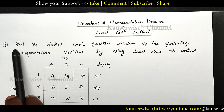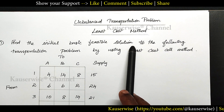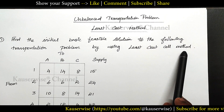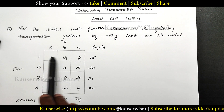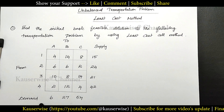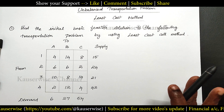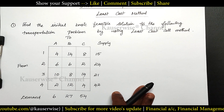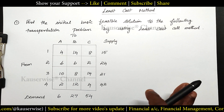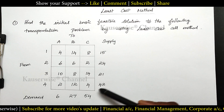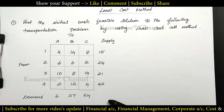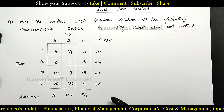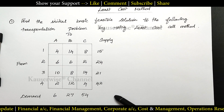See the problem: find the initial basic feasible solution to the following transportation problem by using least cost cell method. Here they have given the cost matrix with supply and demand. Before you solve any transportation problem, first you have to check whether the problem is balanced or unbalanced. Balanced transportation means both supply and demand will be equal. If demand and supply are not equal, then the problem is called an unbalanced transportation problem.